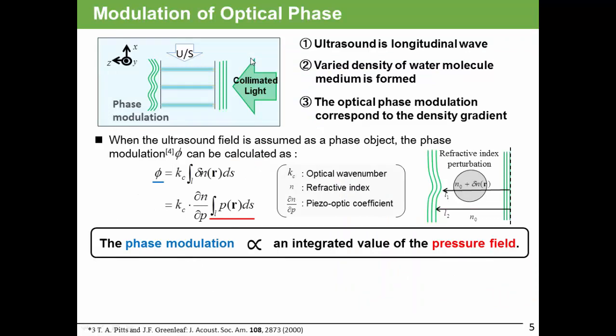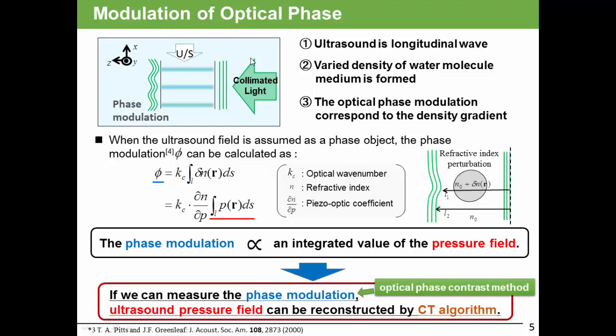Let me explain the modulation of optical phase. Ultrasound is longitudinal waves. So, when it propagates through the water, various density of the water molecule mediums is formed. When the collimated light passes through this medium, the optical phase modulation corresponds to the density gradient. When the ultrasound field is assumed as the phase object, the phase modulation can be calculated at this equation. The phase modulation is proportional to an integral value of the pressure field. So, if we can measure the phase modulation by using optical phase contrast method, ultrasound pressure fields can be reconstructed by CT algorithm.